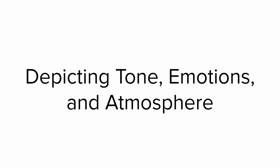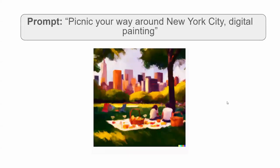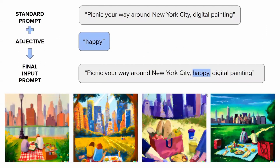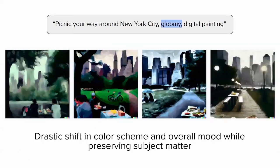Suppose you want to create a scene of a picnic—the prompt given to DALL-E would be 'picnic your way around New York City, digital painting.' To add narrative context, you can add an adjective. Adding 'happy' to create 'picnic your way around New York City, happy, digital painting' directs the AI toward a bright and cheery image. Adding 'gloomy' instead causes the model to pivot toward depicting a much more somber meal at the park. In both cases, the subject is preserved while the color scheme changes.